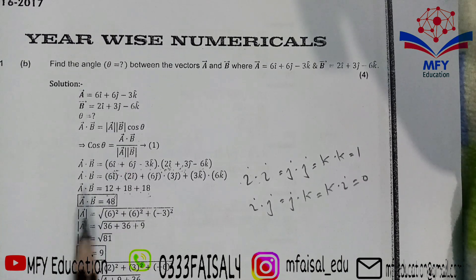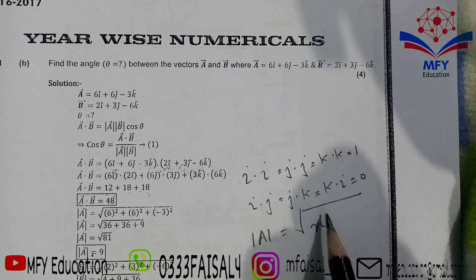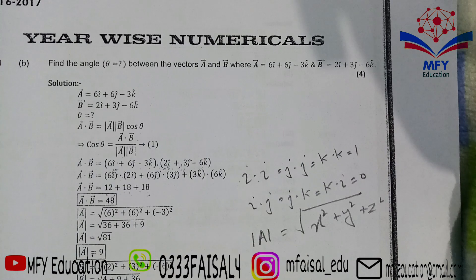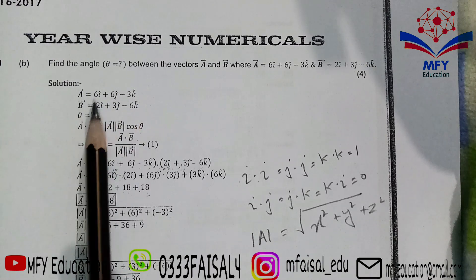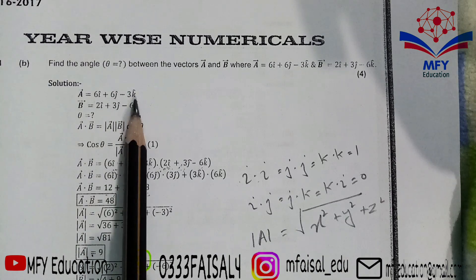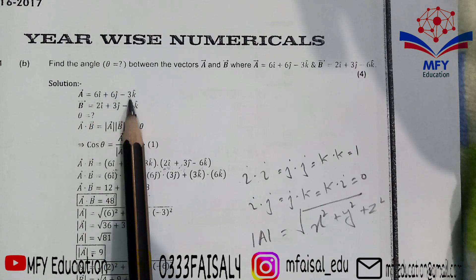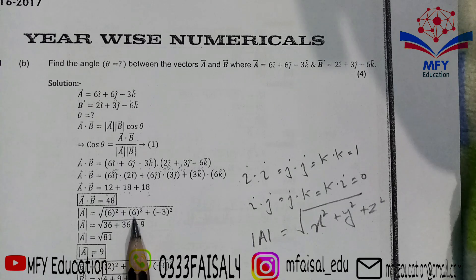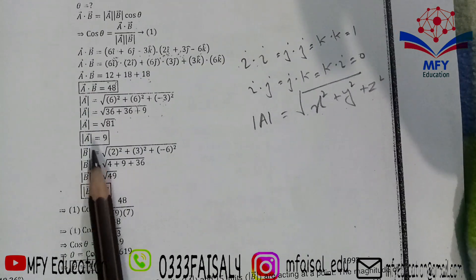Now find mod a. The formula is √(x² + y² + z²). For vector a = 6i + 6j − 3k: x = 6, y = 6, z = −3. So |a| = √(36 + 36 + 9) = √81 = 9.